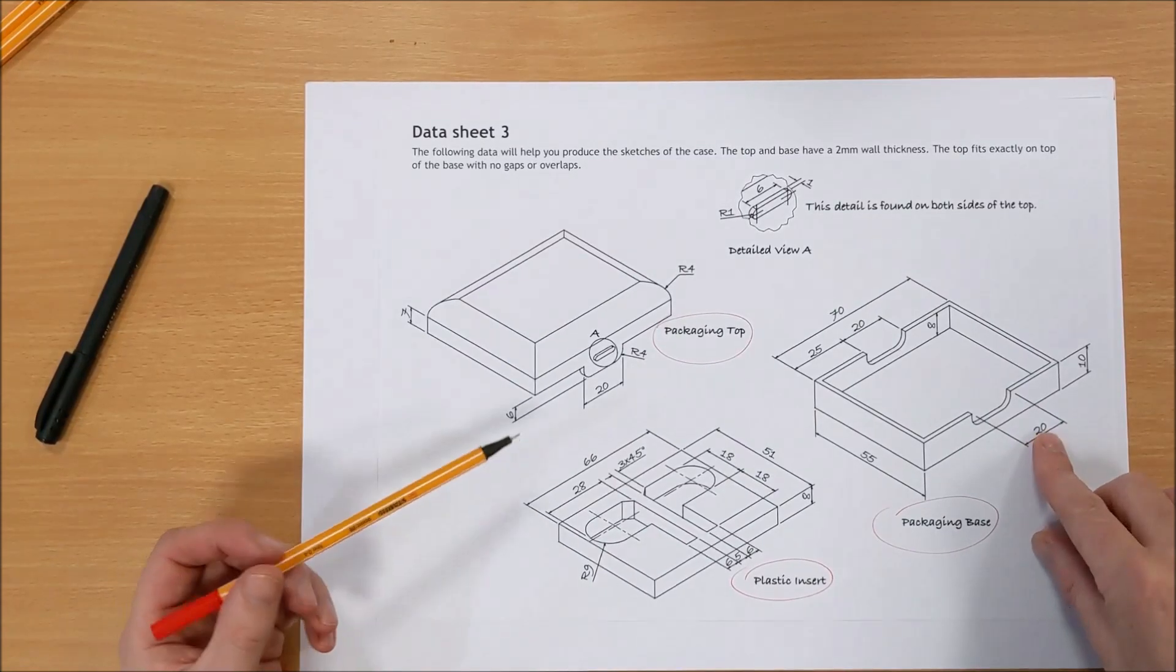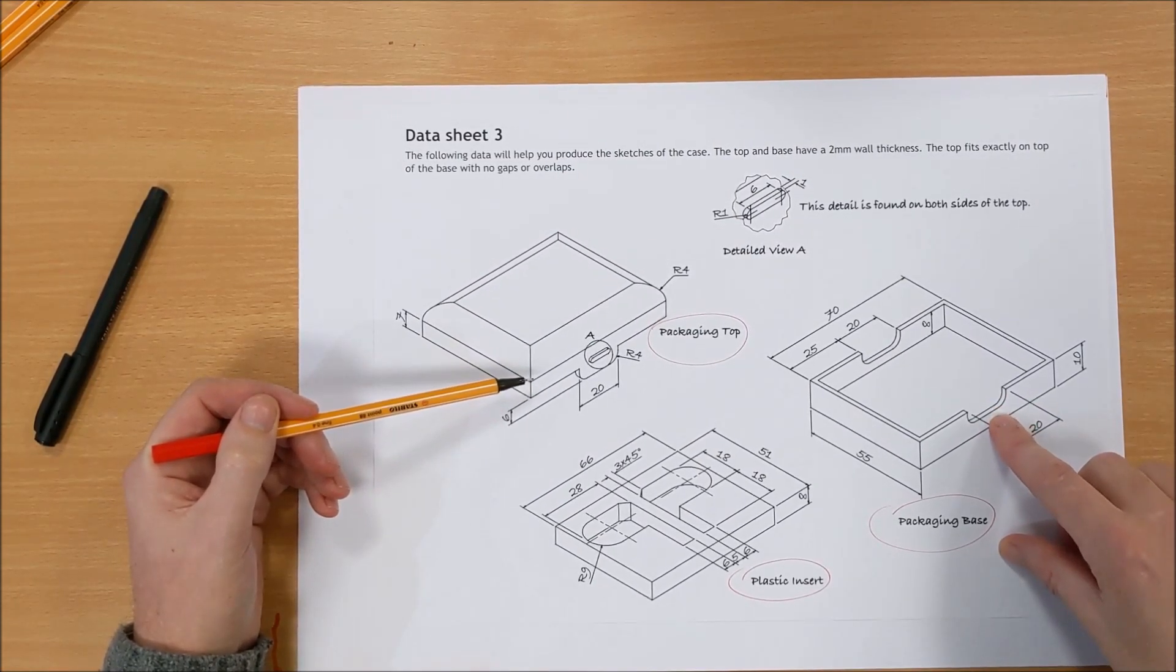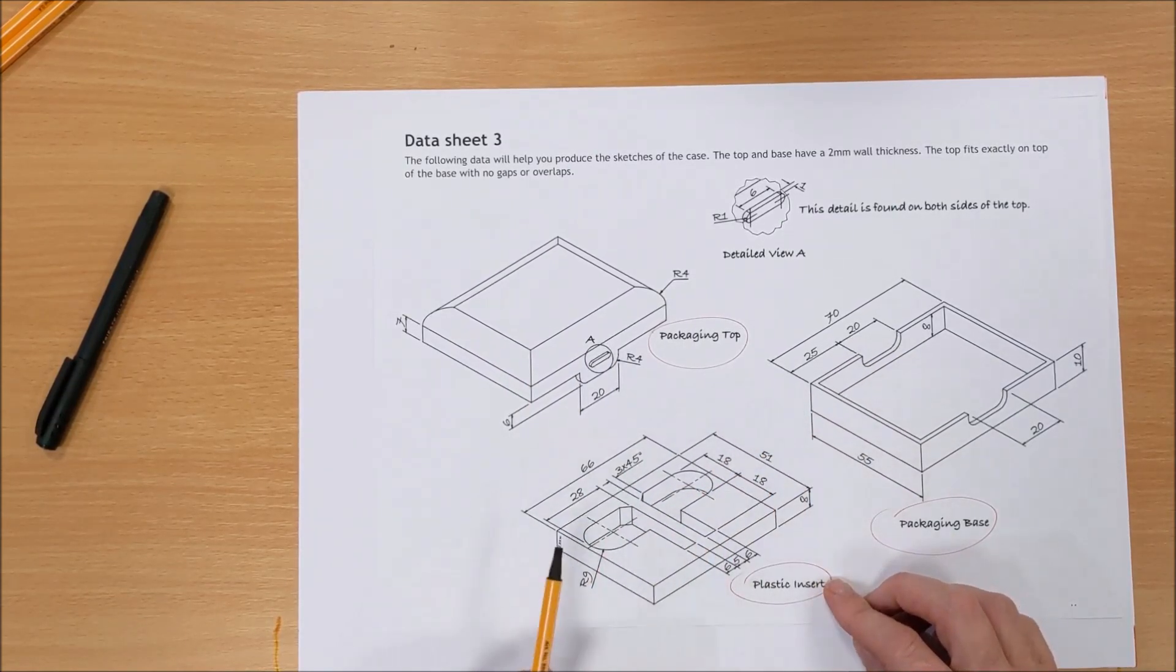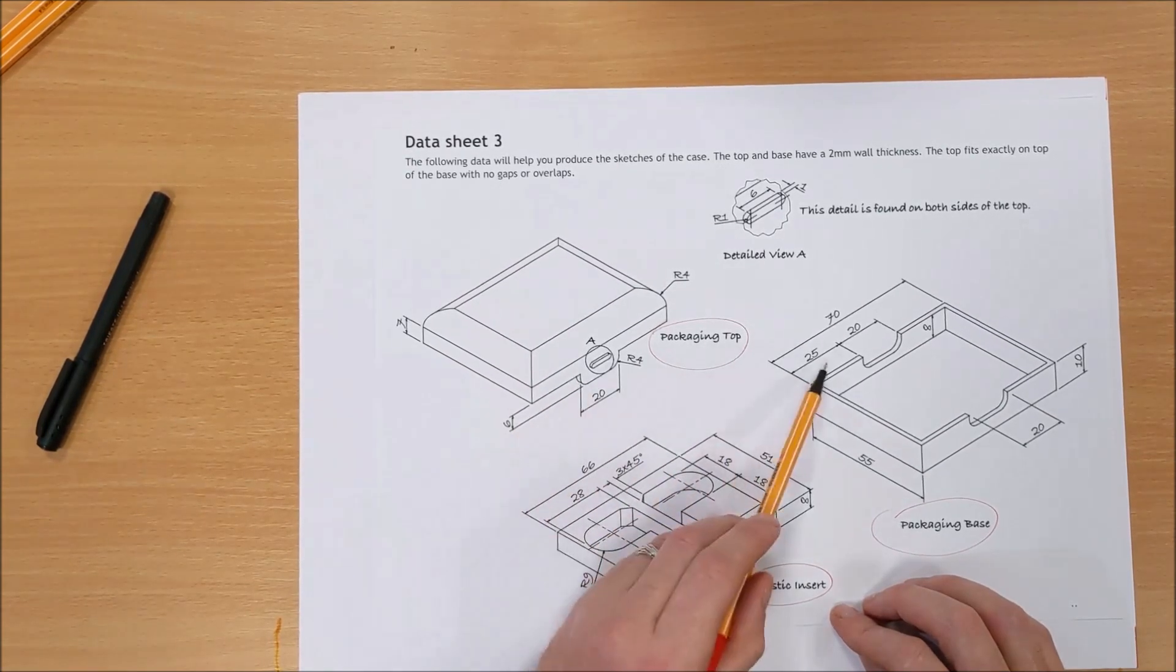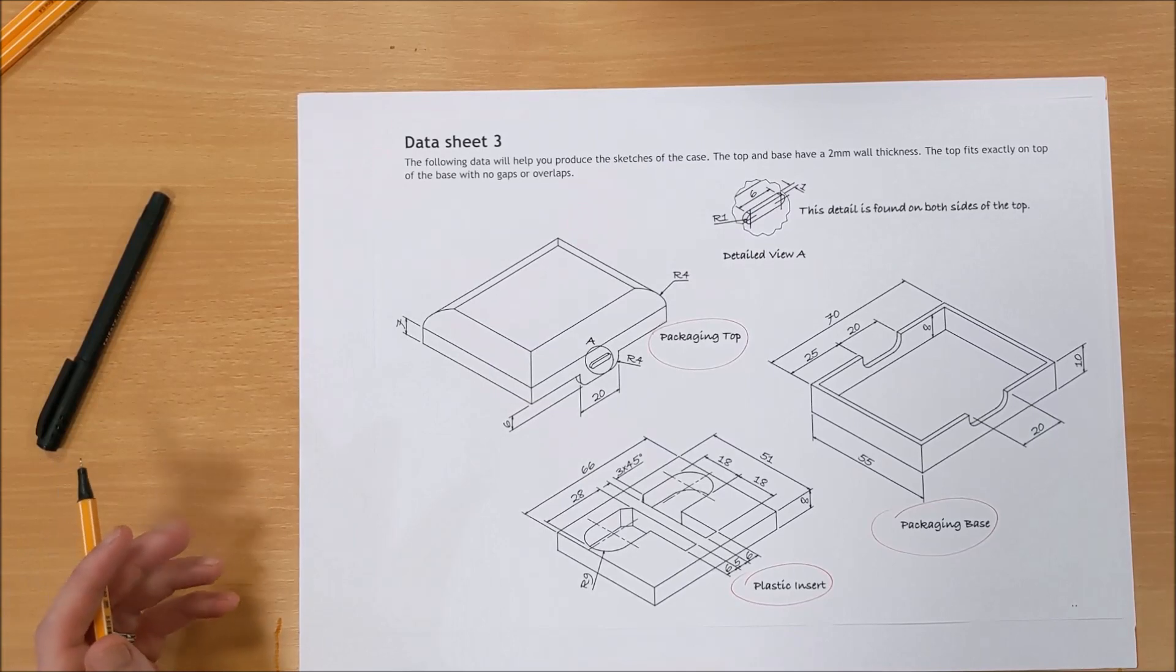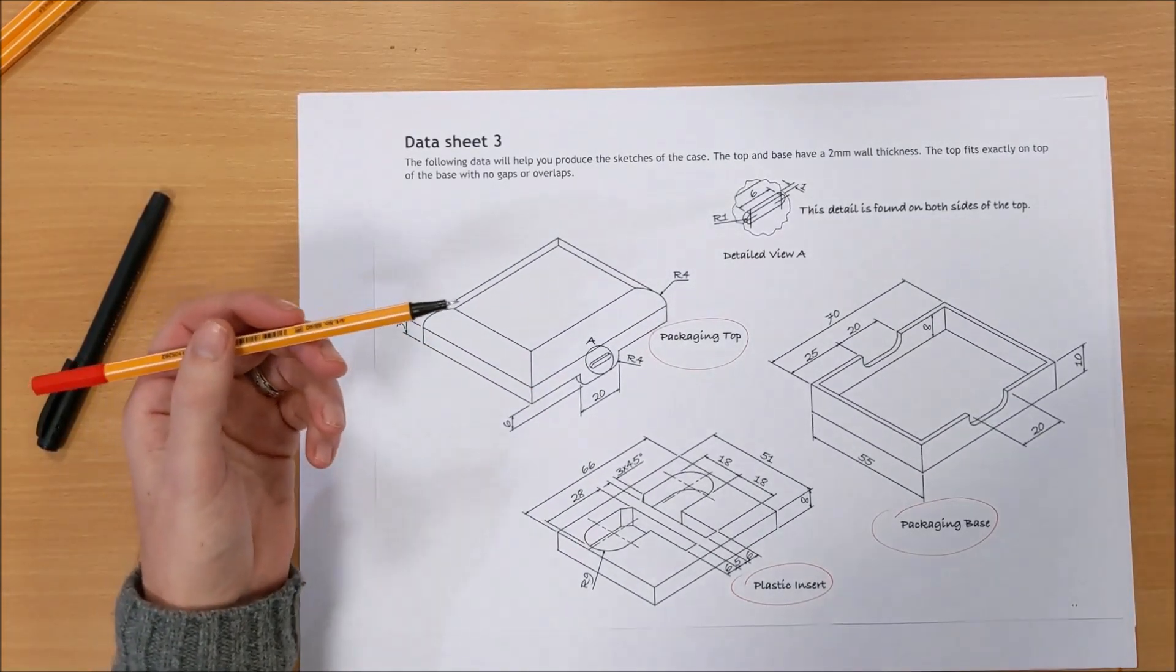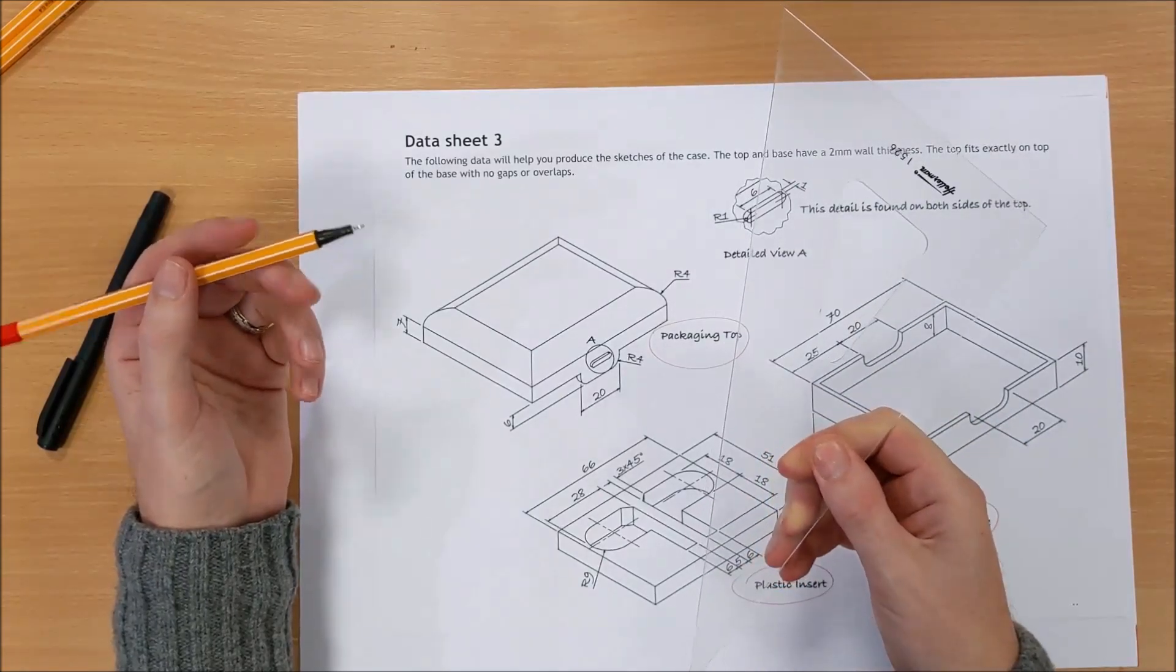You'll notice that bit there is 20 and lo and behold so is that. That's 6 down and so will that be there as well, so this bit fits in perfectly. You can't see that bit on the other side but you know there is a bit on the other side because there's two slots for it to fit into. Your size from there to there comes from that drawing, that size there, so you know that's 25. It's a sketch, it shouldn't be overly complicated.